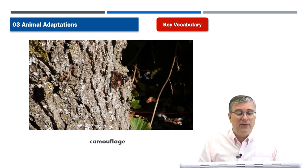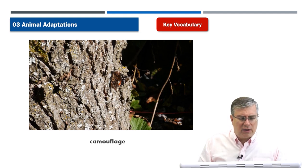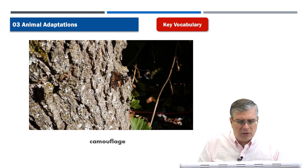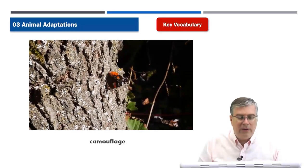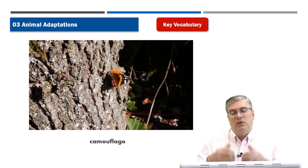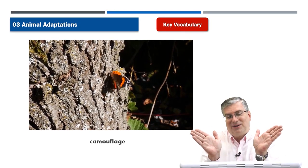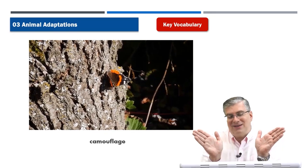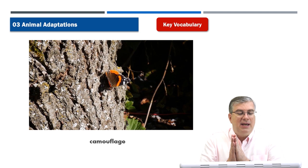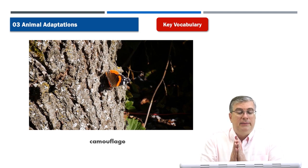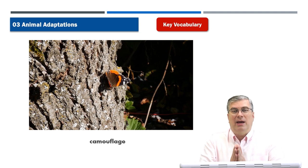The video shows camouflage in action. Look at the picture — can you see the creature? It's like playing Where's Waldo. There it is — it's a butterfly. When it opens its wings, we can see it easily, but when it closes its wings, it's hard to see because it looks like part of the tree bark. That's a type of camouflage.